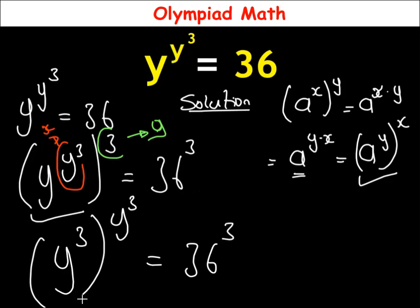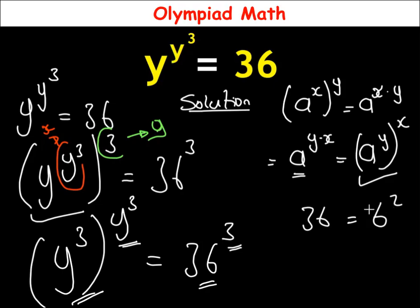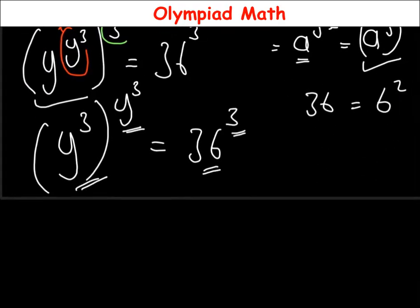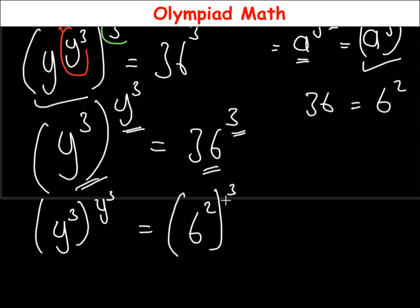Looking at the left-hand side, y raised to power 3 is both the base and the exponent. On the right-hand side, the base should also equal the power. Note that 36 is equal to 6 raised to power 2, so in place of 36 we bring in 6 squared. We then have: in brackets y raised to power 3, all raised to power y raised to power 3, equals in brackets 6 squared, all raised to power 3.